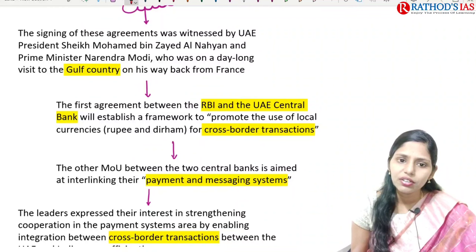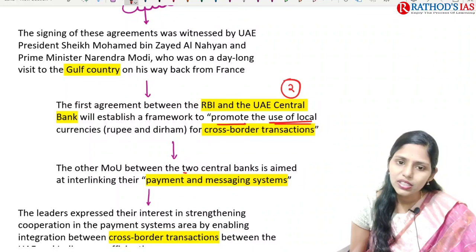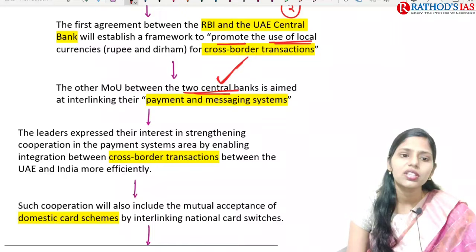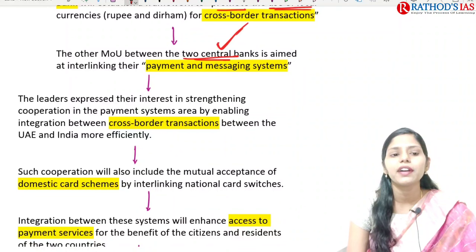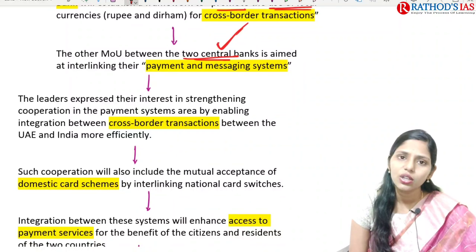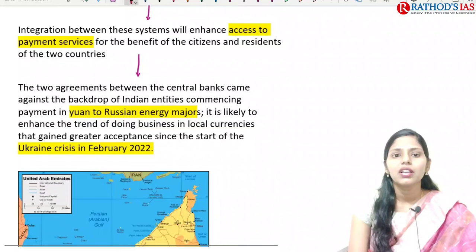With these two MOUs, the UAE president and India's prime minister were on a one-day visit. This is the first agreement signed between RBI and the UAE Central Bank. They want to establish a framework to promote the use of local currencies for cross-border transactions. The second MOU between the two central banks aims to interlink payment and message exchange systems to enable cross-border transactions.